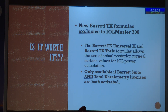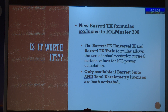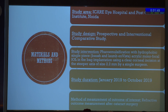Loading the program itself cost about 15 lakh rupees for the IOL 700, so we wanted to know if it was worth it. The Barrett TK Universal 2 and Barrett TK TORIC were the formulas that allowed use of actual posterior corneal measurement, available only if both the Barrett suite and total keratometry licenses were activated. The study was done at an eye care hospital in NOIDA, and the study design was a prospective interventional comparative study.